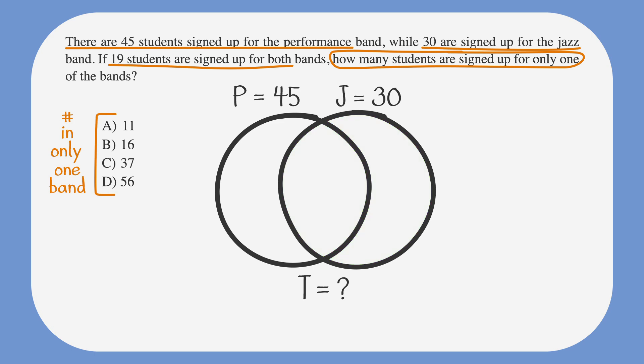Lastly, we're told that there are 19 members in both bands. We need to include that in the Venn diagram portion that overlaps. Great! We've got our Venn diagram drawn and labeled.